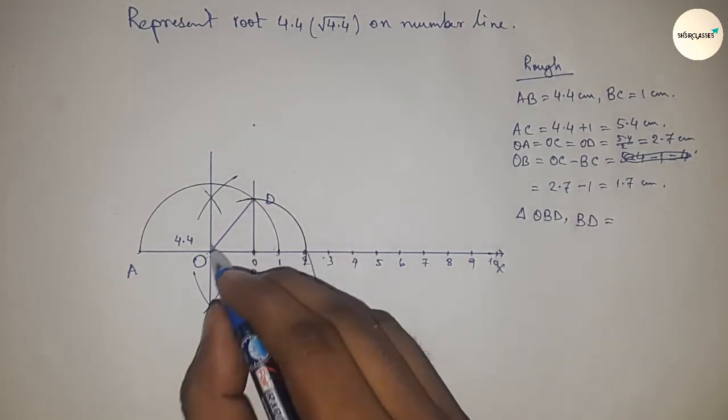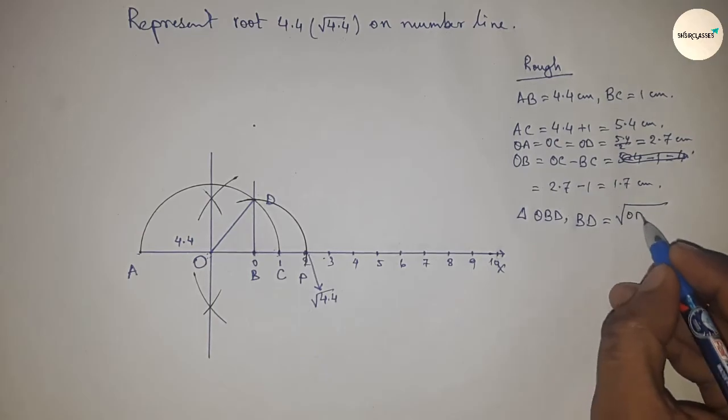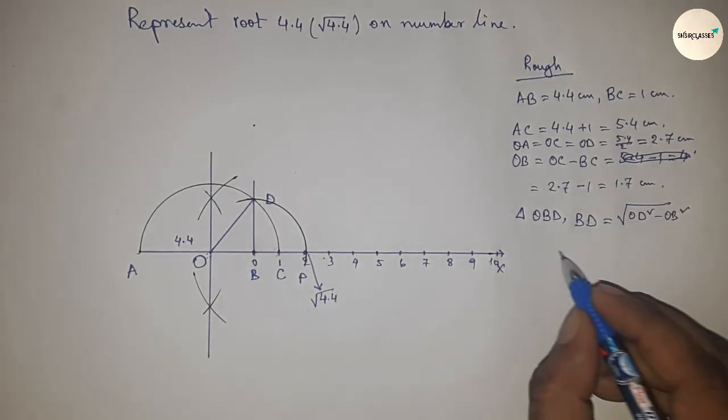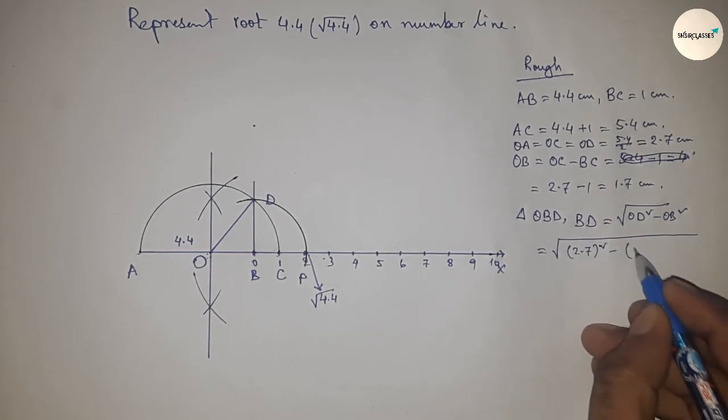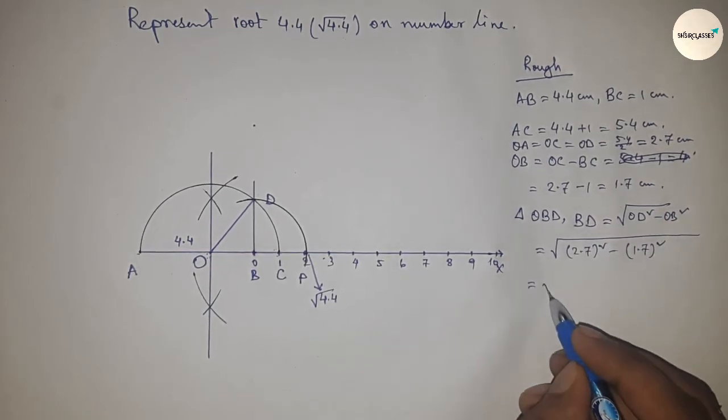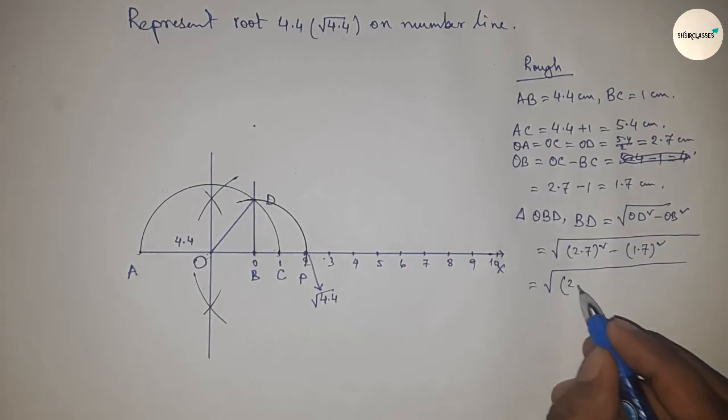BD equal to by Pythagoras theorem, OD square minus OB square. So putting the value of OD and OB.